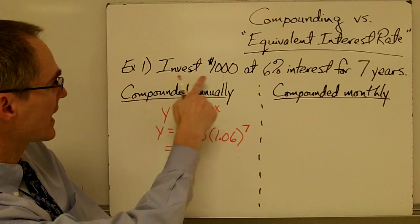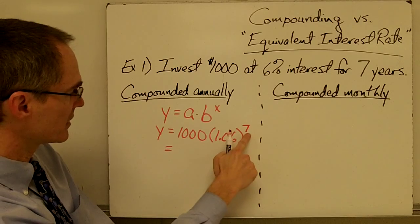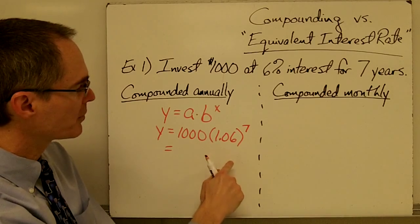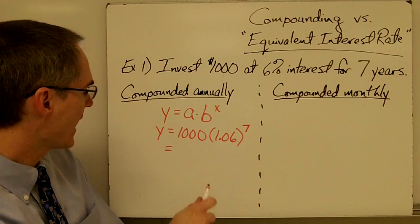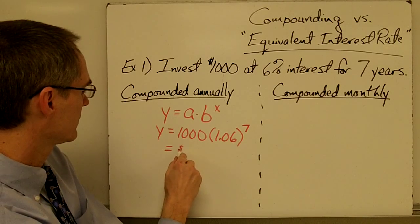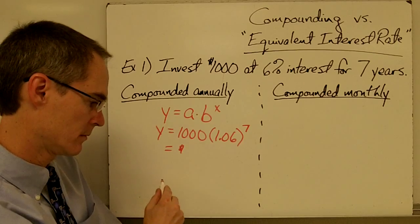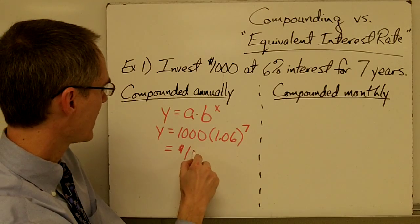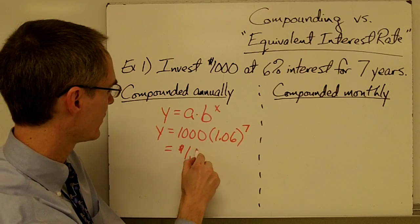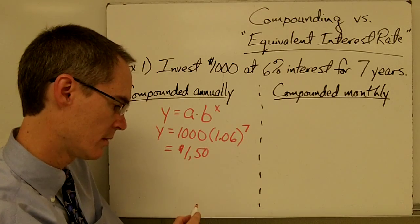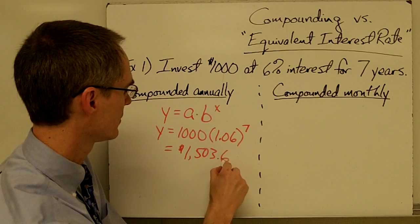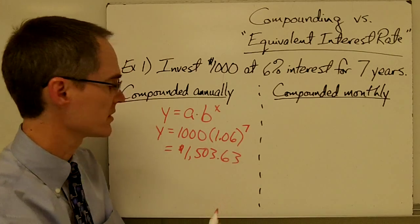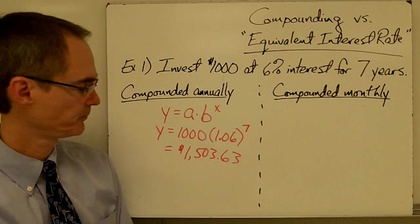So if I want to find out how much money I'm going to have at the end of seven years, I'll punch this into my calculator and I get one thousand five hundred and three dollars and sixty-three cents.